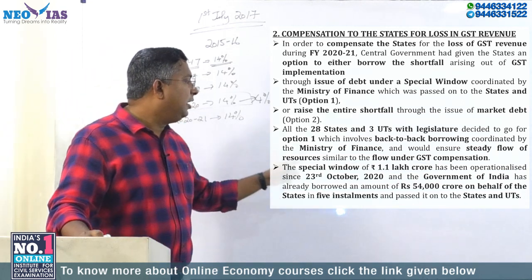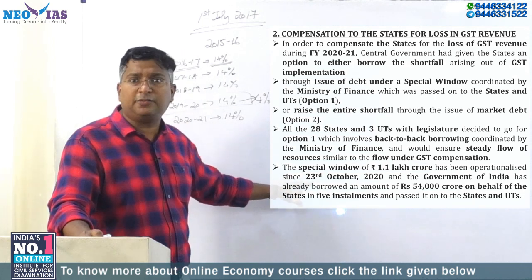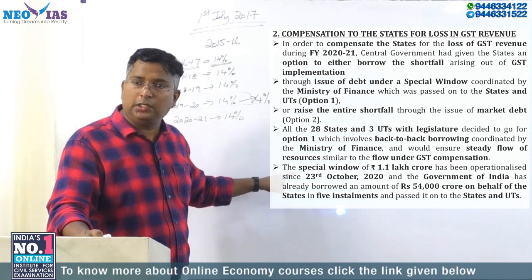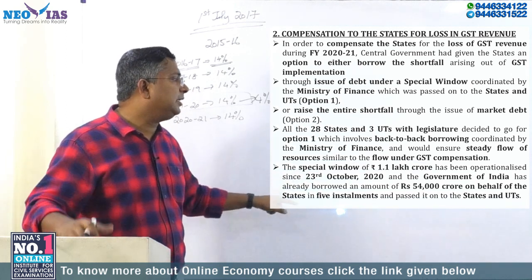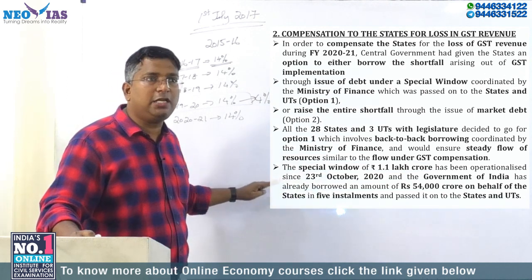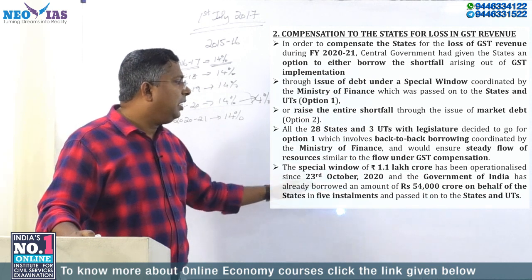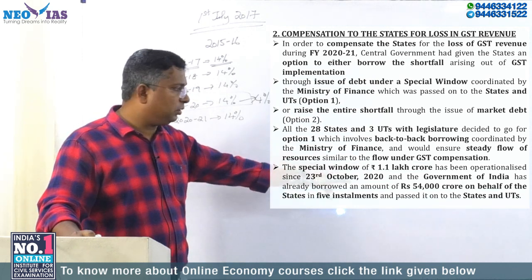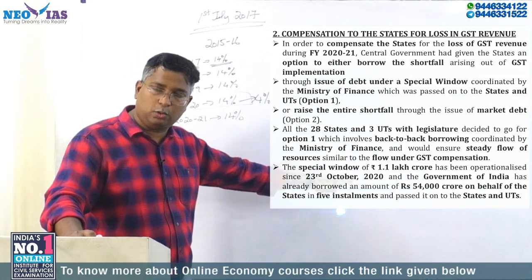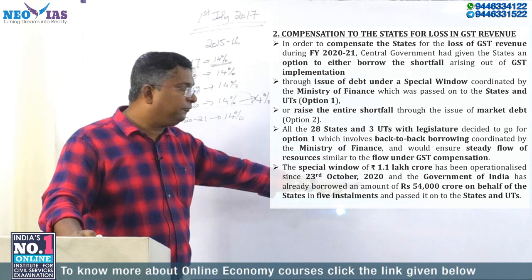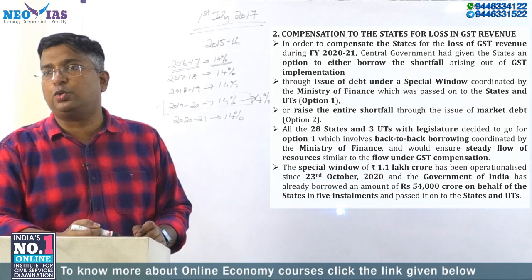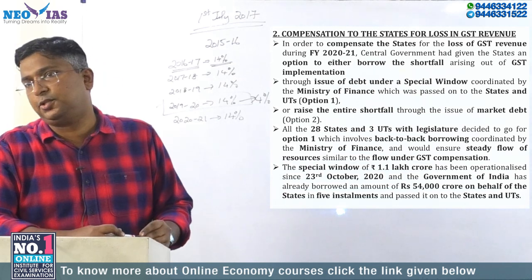The center will borrow Rs. 1.1 lakh crore under this special window program. This program started from 23rd December 2020. As per the Economic Survey data, the Government of India, out of Rs. 1.1 lakh crore, has already borrowed Rs. 54,000 crore on behalf of the states in 5 installments, and it has been passed over to those states and union territories with legislature.